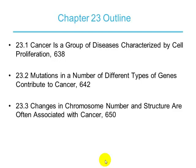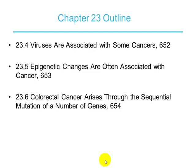You need to have multiple mutations — multiple insults in a particular gene — in order to bring up the cancer. We know that changing chromosome number and chromosome structure are often associated with cancer. Viruses are associated with cancers. Also, epigenetic changes. Remember epigenetics: it's something that influences how genes are going to be expressed and is not directly linked to the DNA sequence.